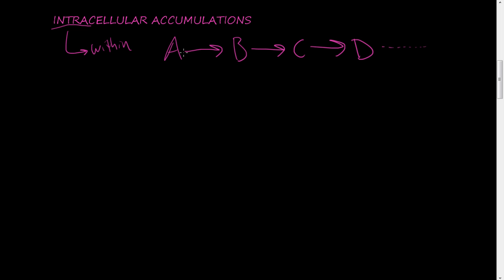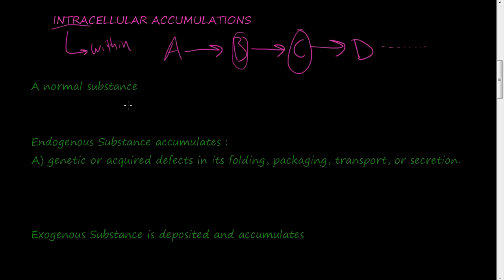It's different for each disease, but we can tell that something is accumulating. We start to see this under a microscope, so we know that the disease is up to a certain point. There are three main classifications of how accumulations can occur. The first is a normal substance that is produced at a normal or increased rate, but the metabolic processes of the cell are inadequate to keep up with the supply.